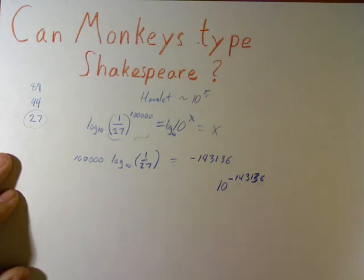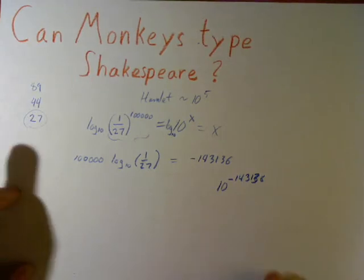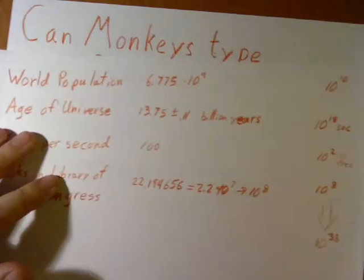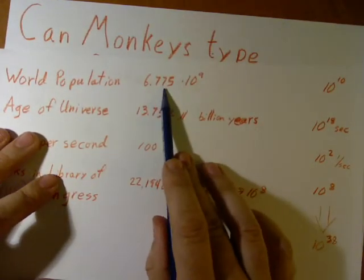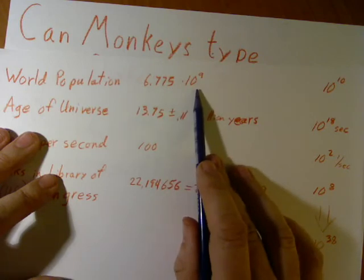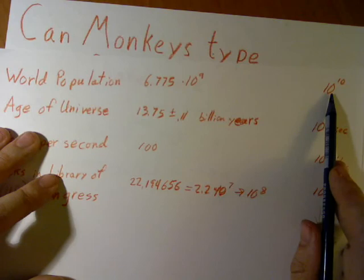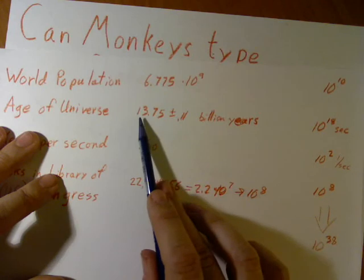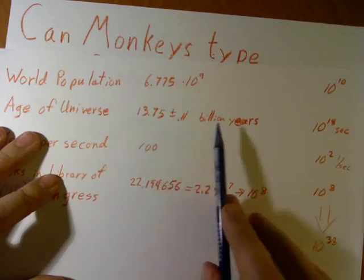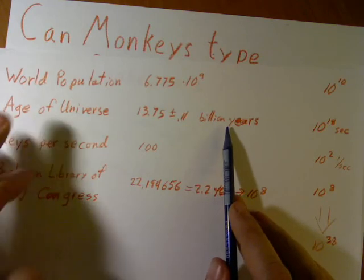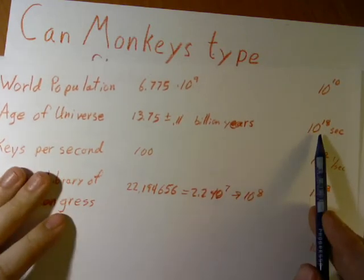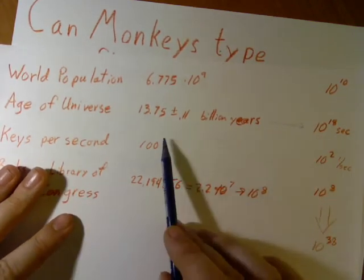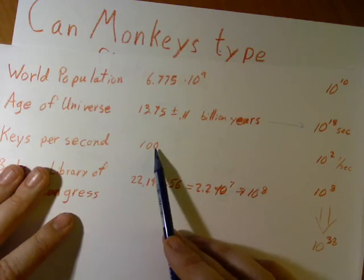Okay, but let's say we have a lot of these monkeys. Let's say we have, well, world population is 6.75 times 10 to the ninth, so 6.7 billion people. Let's say we have even a bit more monkeys, 10 to the tenth. Age of the universe. The entire universe has lasted 13.75, give or take a bit, billion years. Let's round up to 10 to the 18th seconds. These are fast monkeys. Let's say they type 100 keys per second. Really fast monkeys.